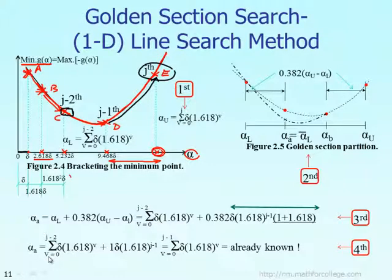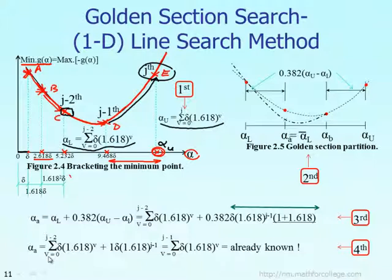The upper bound is at point E. The value of the alpha upper bound is given by this formula right there. I will explain in a minute if you don't understand that formula. The lower bound at point C is given by this formula right there. The formula for alpha upper bound equals the summation where index V goes from zero to J. What is J? J represents how many iterations it will take to find the initial upper bound.